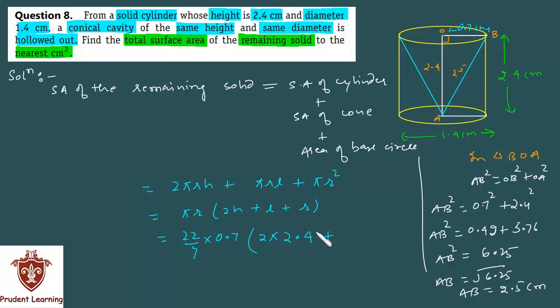Now I will substitute here. In place of l we will write 2.5 plus r, radius still remaining same 0.7. For calculation, 0.7 and 7 will cancel, this will be 1/10. 2 × 2.4 is 4.8, plus 2.5 you will get 7.3, plus 0.7 you will get 8. So this is the whole term in the bracket is 8. So you will have 22 × 8, and the denominator is 10. 22 × 8 is 176 upon 10, so you will get finally 17.6.